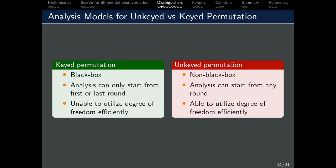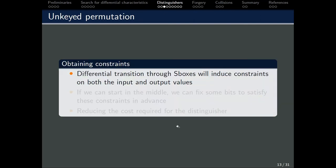However, we cannot do it for the keyed permutation. Here, we will explain what we meant by utilizing the degree of freedom in more detail. As the probabilities or the uncertainties for differential characteristics come from the S-boxes, this means that there are certain restrictions or constraints on the input and output values for the S-box. If we can start, say, at the output of a certain S-box or some middle points, we are able to fix some of the bits that satisfy these constraints in advance. This can ensure that the required difference will always propagate through. This will then reduce the overall cost of the distinguisher.